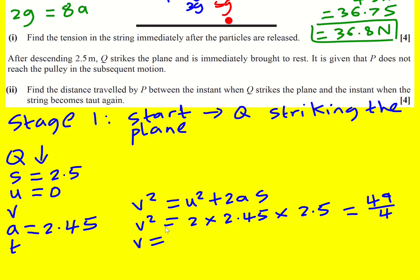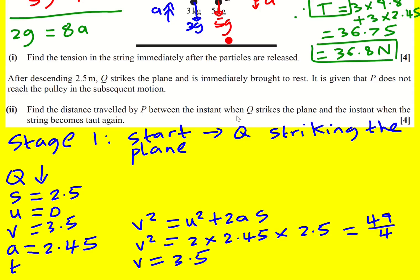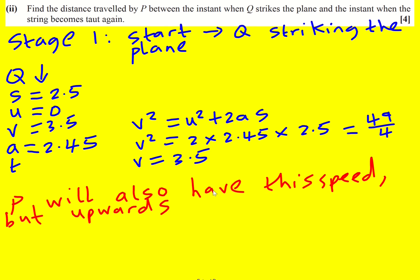So V, I'm only really interested in the positive value. So I can just take the square root, I don't need to include plus or minus, it's going to be actually 7 over 2 or 3.5. And that's going to be 3.5 here going down, and P is going to have the same speed. So P will also have this speed, but upwards.